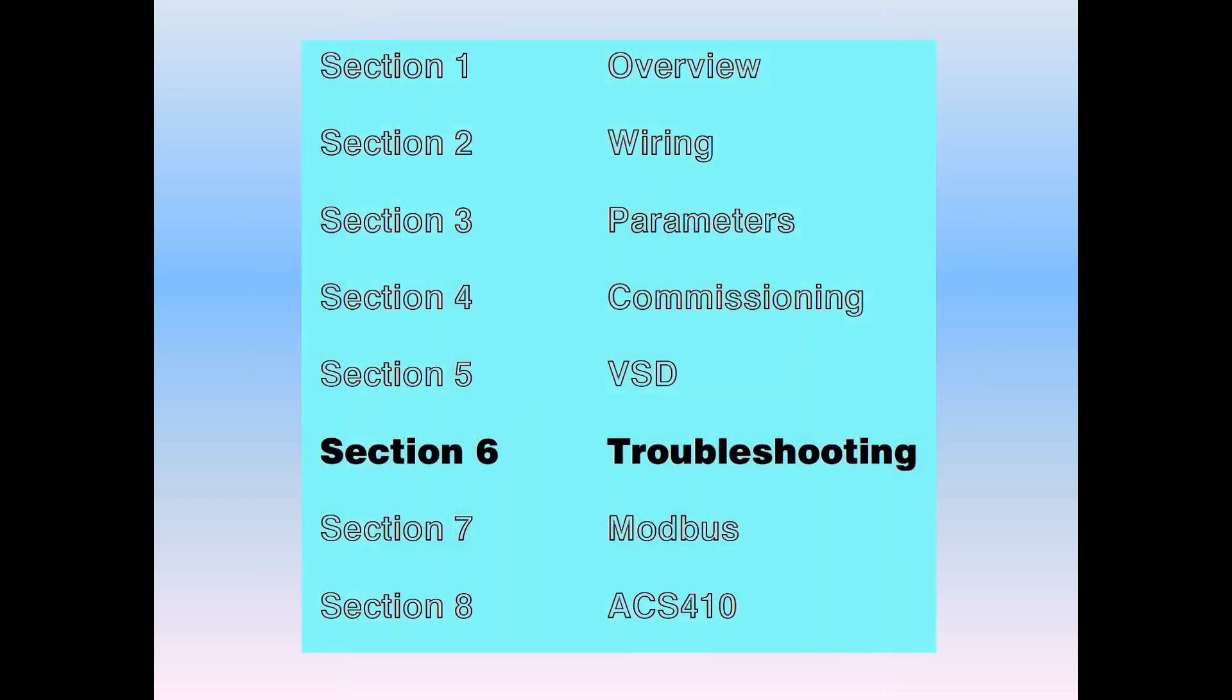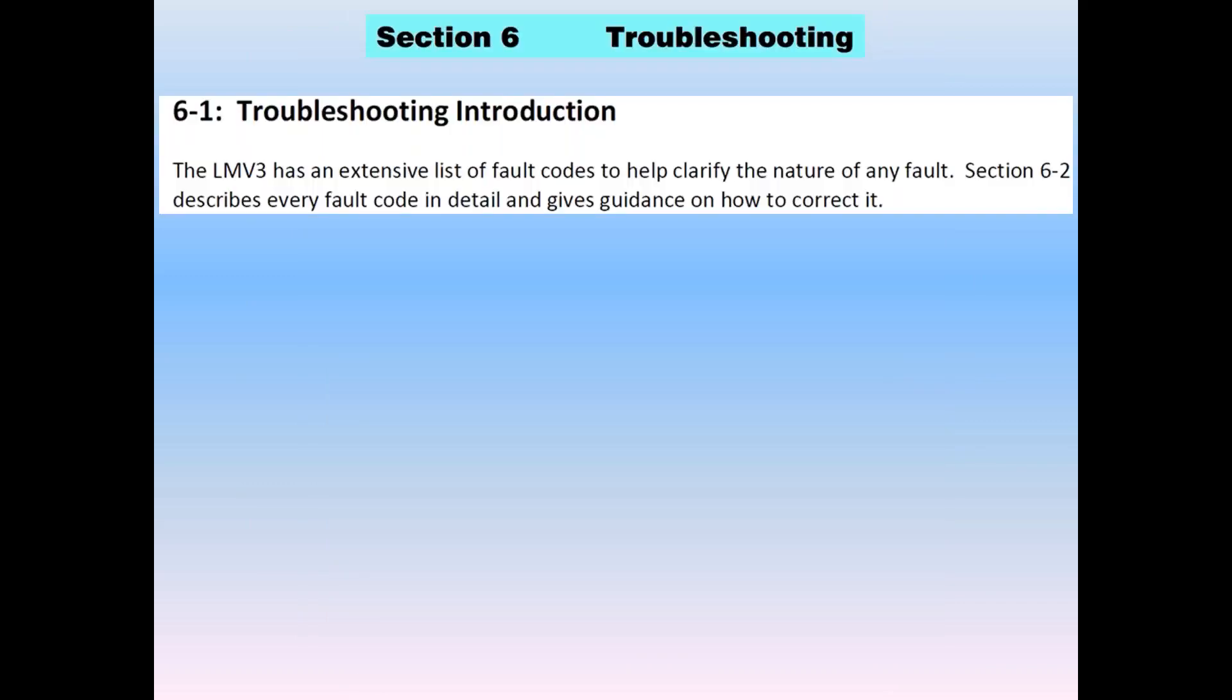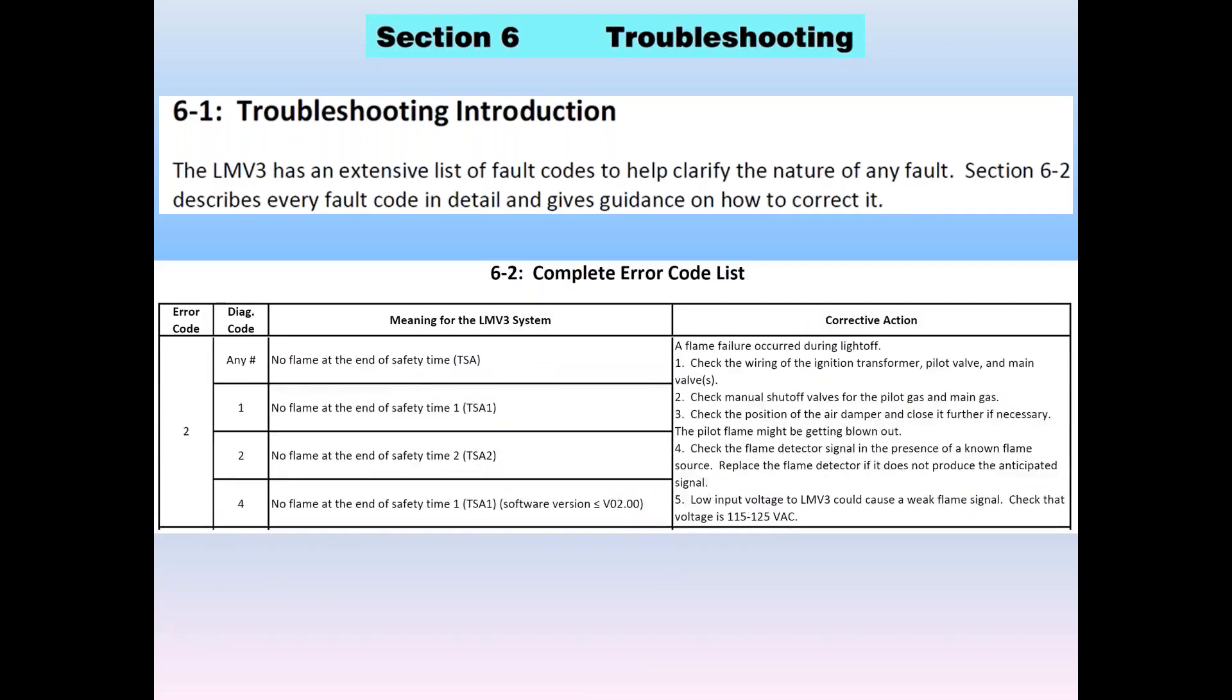Bring it on down to Section 6, troubleshooting. The LMB3 has an extensive list of fault codes that help clarify the nature of any fault. Section 6.2 describes every fault code in detail and gives guidance on how to correct it. This is an example of what the complete fault code looks like. It has the error code. In this case, we're looking at error code 2. The diagnostic code details what in particular about the error code and gives us a higher detail on it, what it actually means on the LMB3 system. And finally, how we go about and use a corrective action to repair the fault.